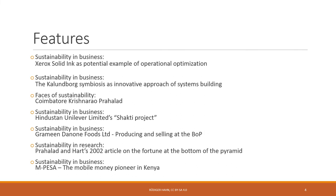As always, this chapter includes several features. The first sustainability in business feature is about Xerox solid ink as a potential example of operational optimization. A second feature covers systems building, using the Kalundborg symbiosis in Denmark as a really innovative approach to circular economy thinking and systems building.